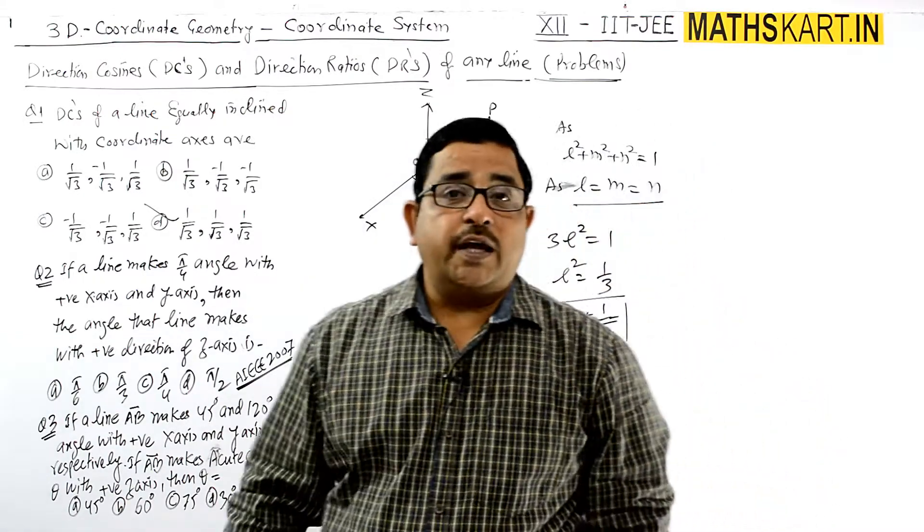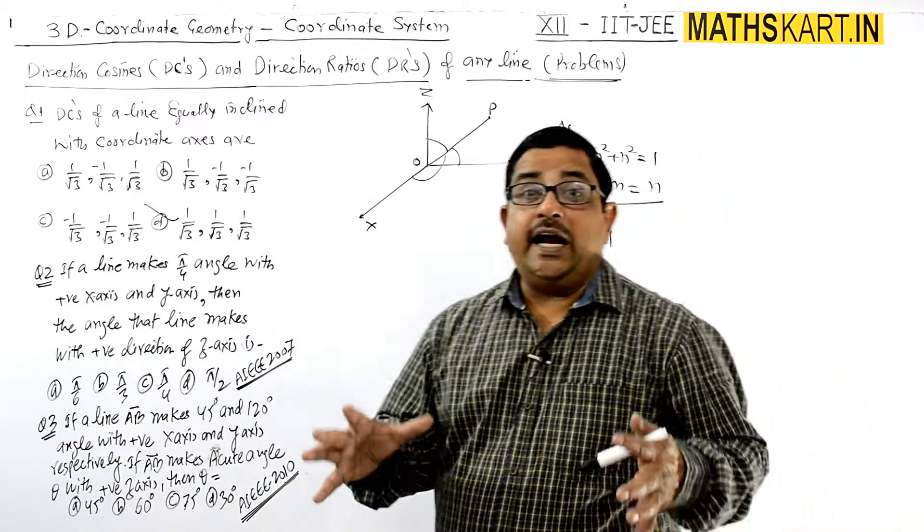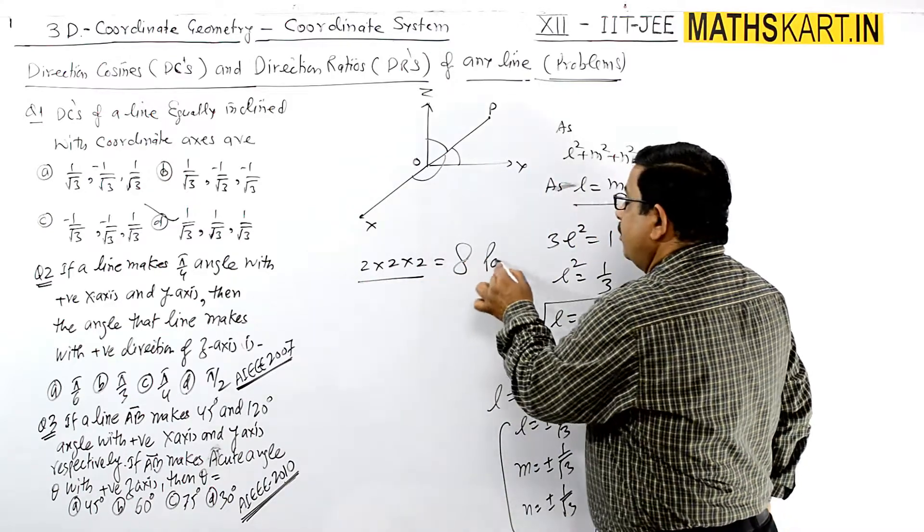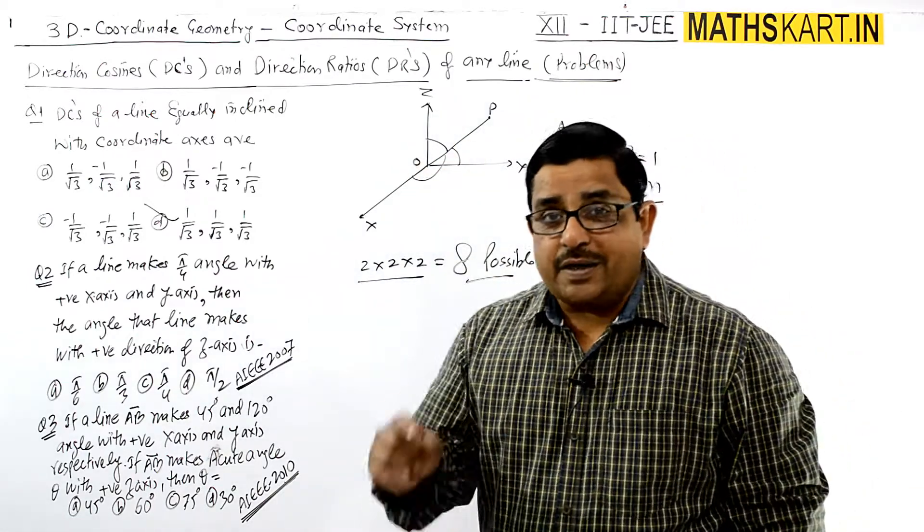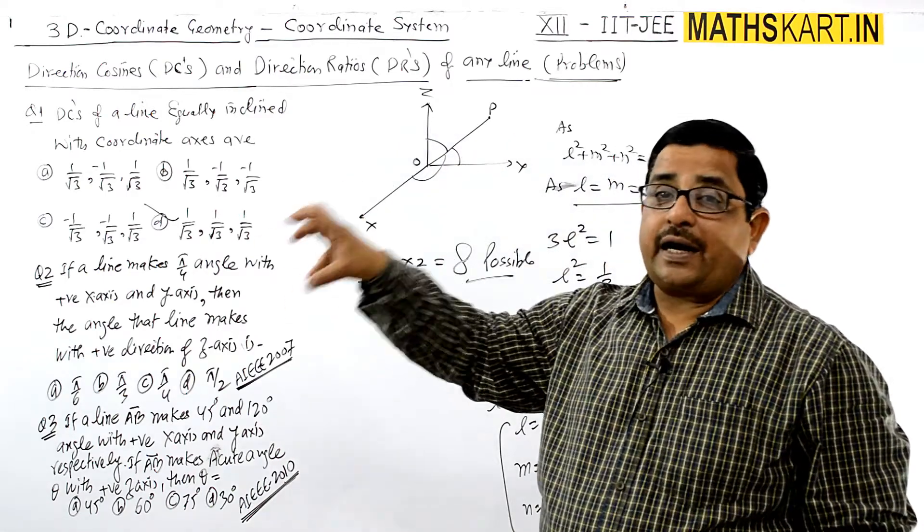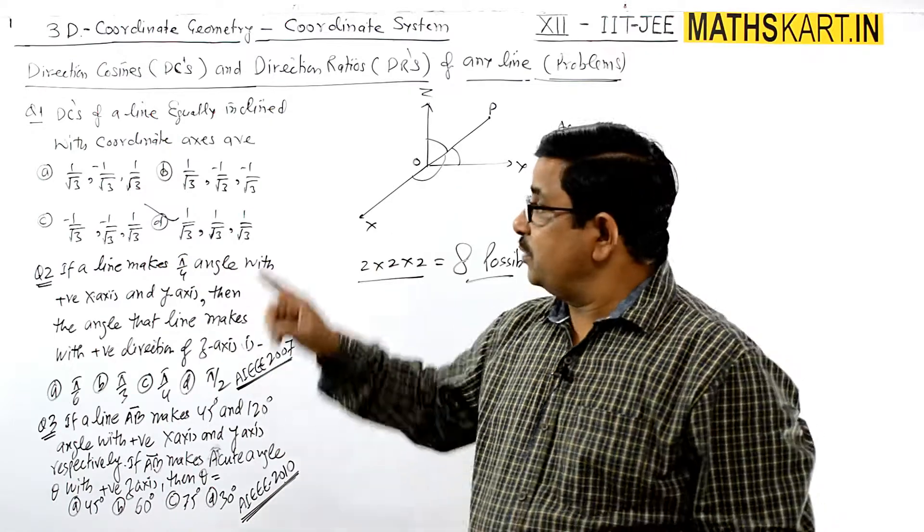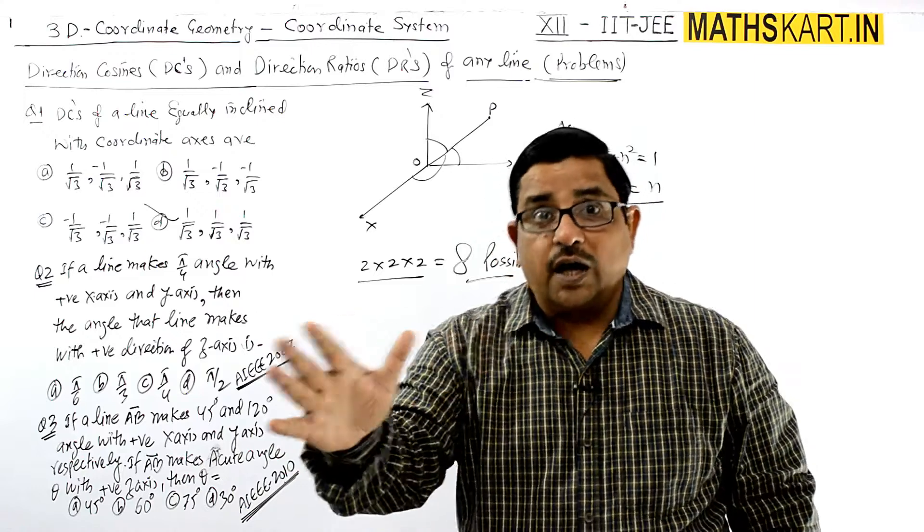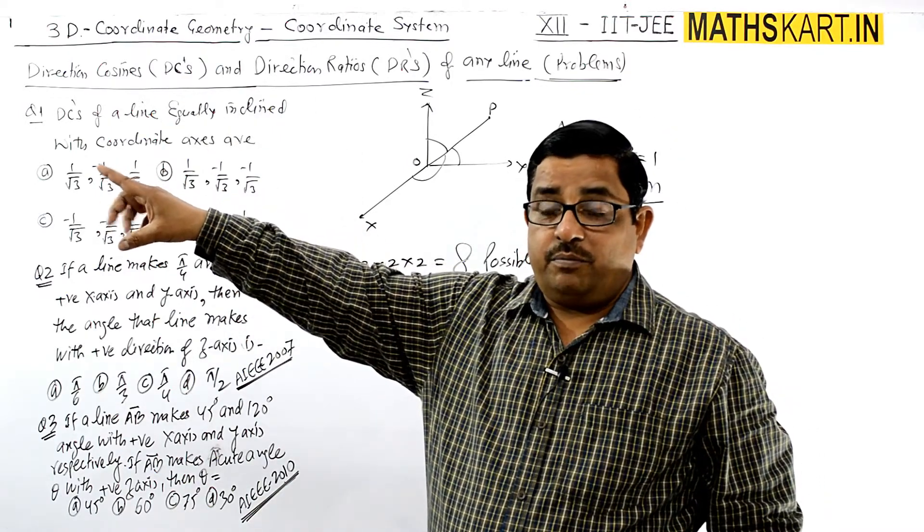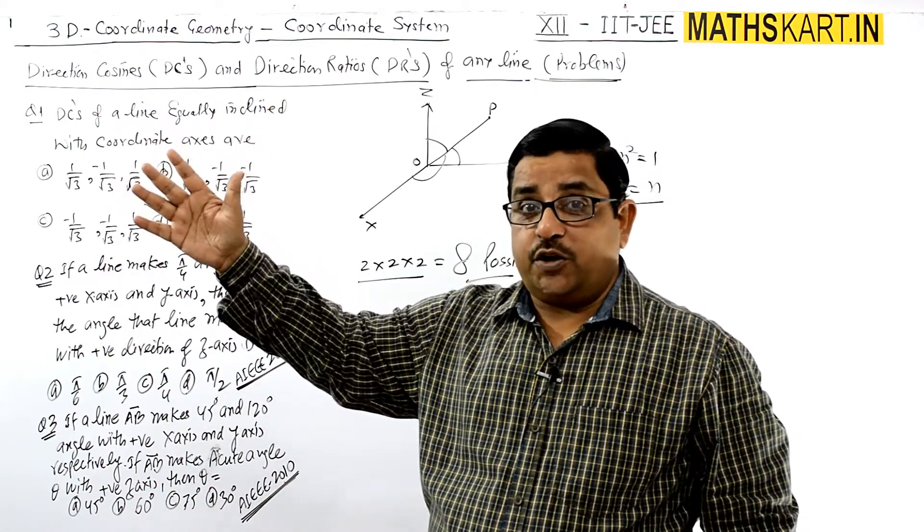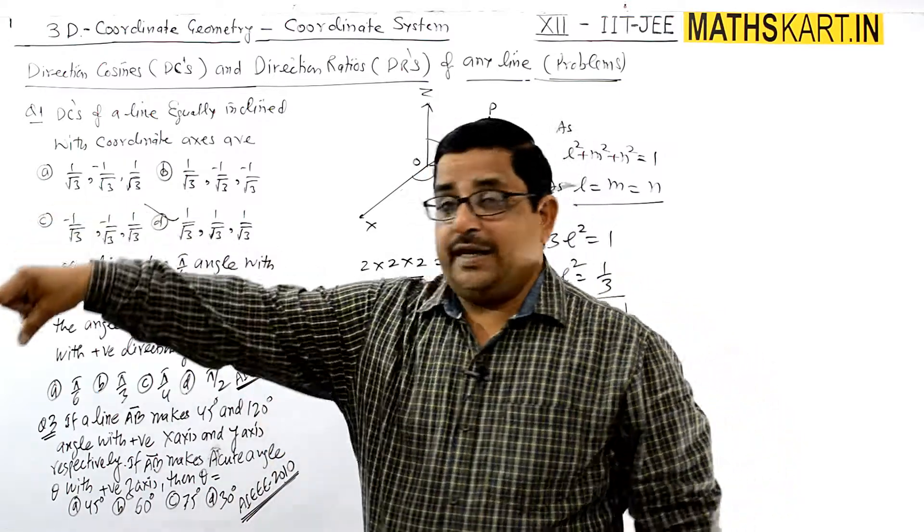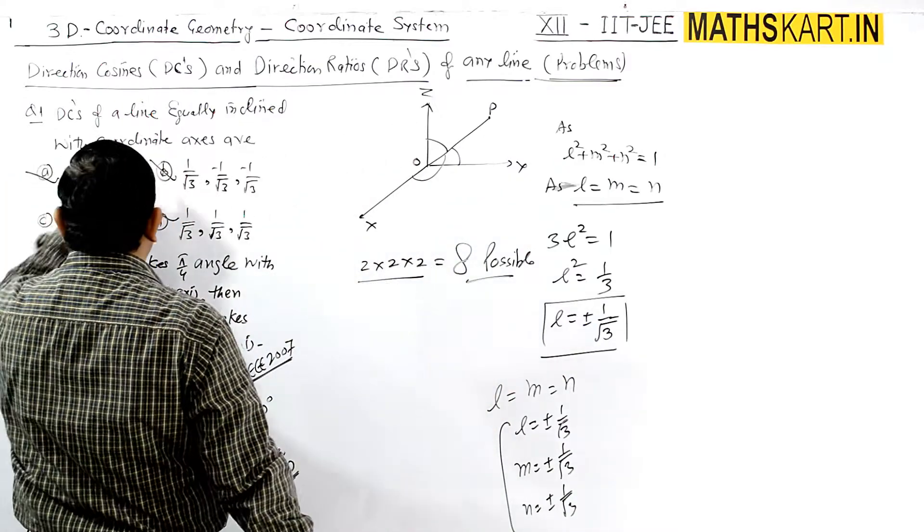In eight octants, plus-minus values give 2×2×2 = 8 possible values. Eight possible coordinates can be made - all plus, or one plus and others minus. Eight possibilities exist. An equally inclined line can go in any of the eight octants. Four options are given here, four more options are possible. All are right because in one octant it makes equal angles. In another octant, one can be obtuse, another can be acute, but it will be acute in another octant - third, fourth, fifth, sixth, seventh, and eighth. Four above, four below. All options are right.